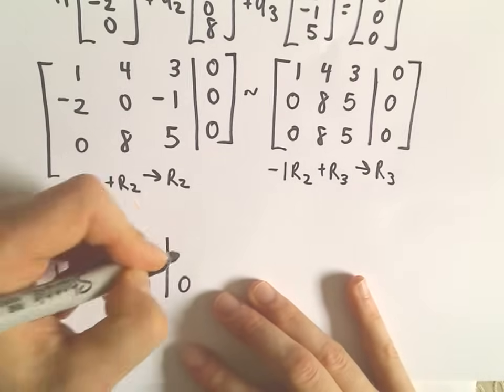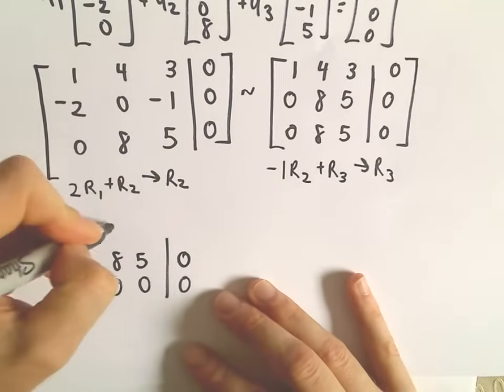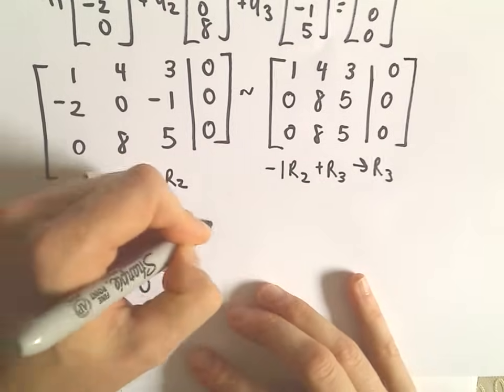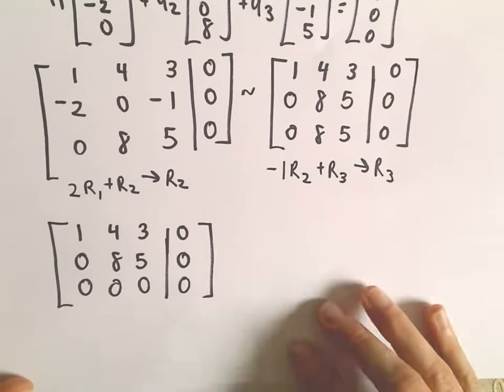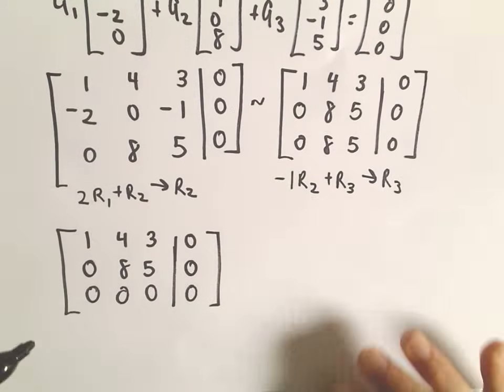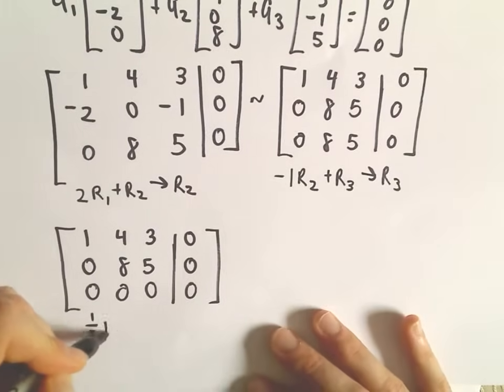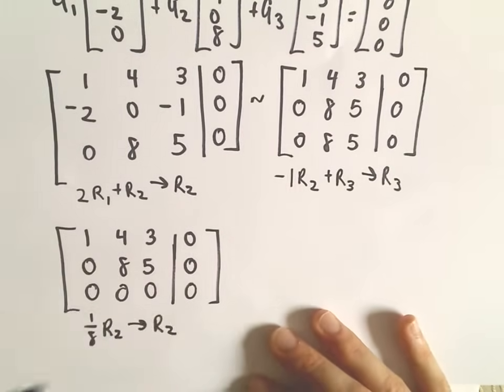Now, you may think, hey, automatically you have non-trivial solutions, but we still need to be a little careful. And you'll see this especially in this second example. So I'm going to keep grinding away here. The next thing I'm going to do is just divide the second row by 8.